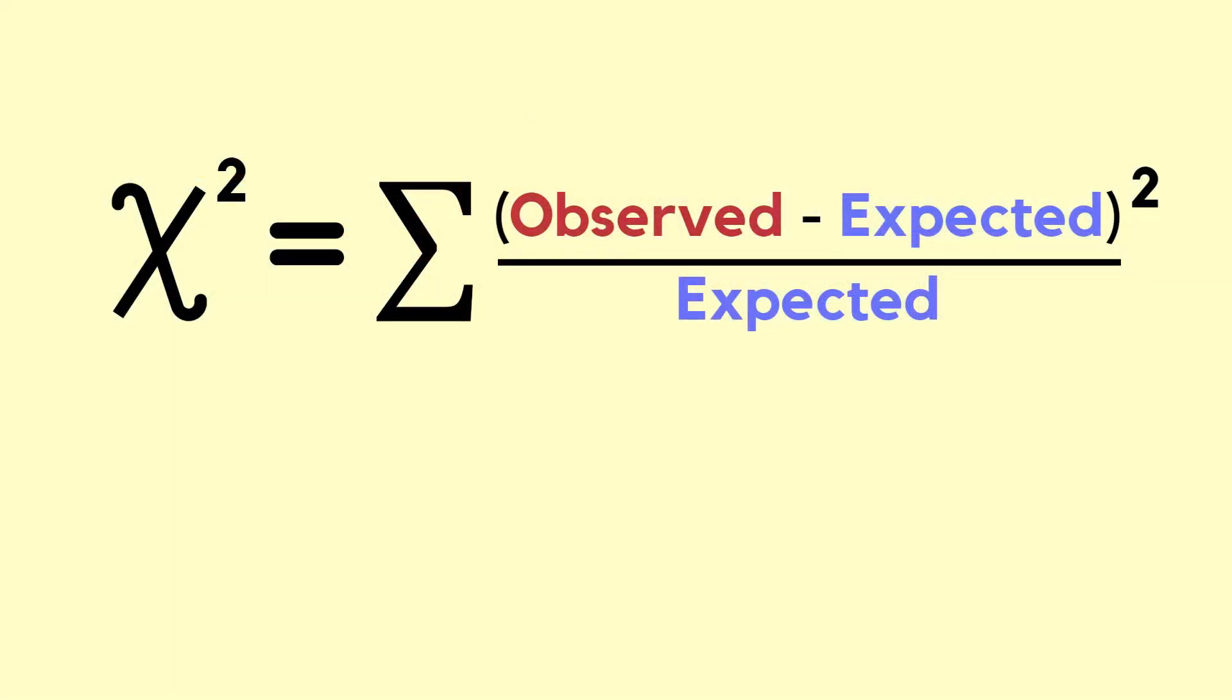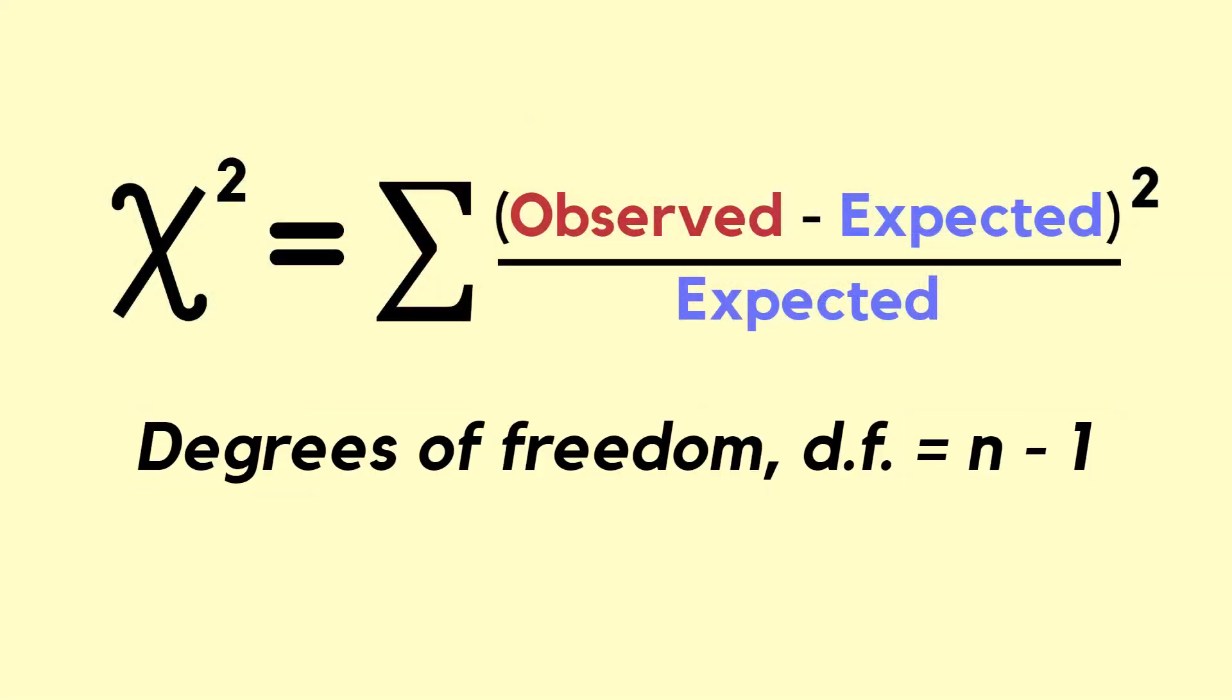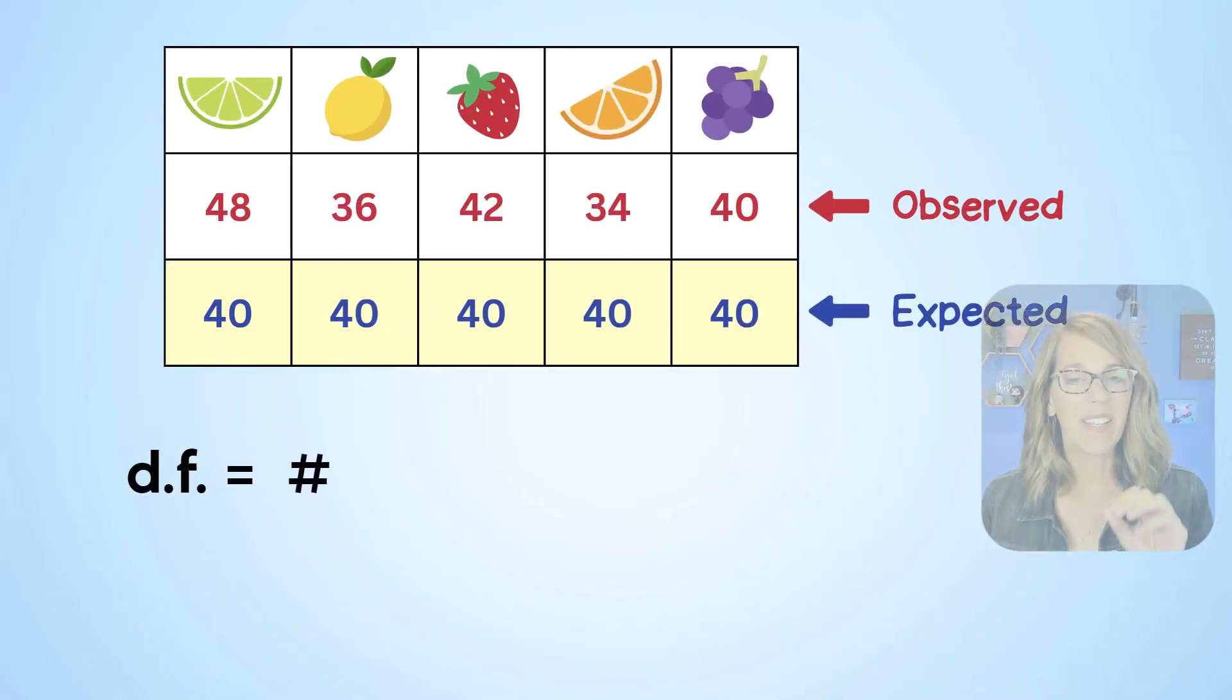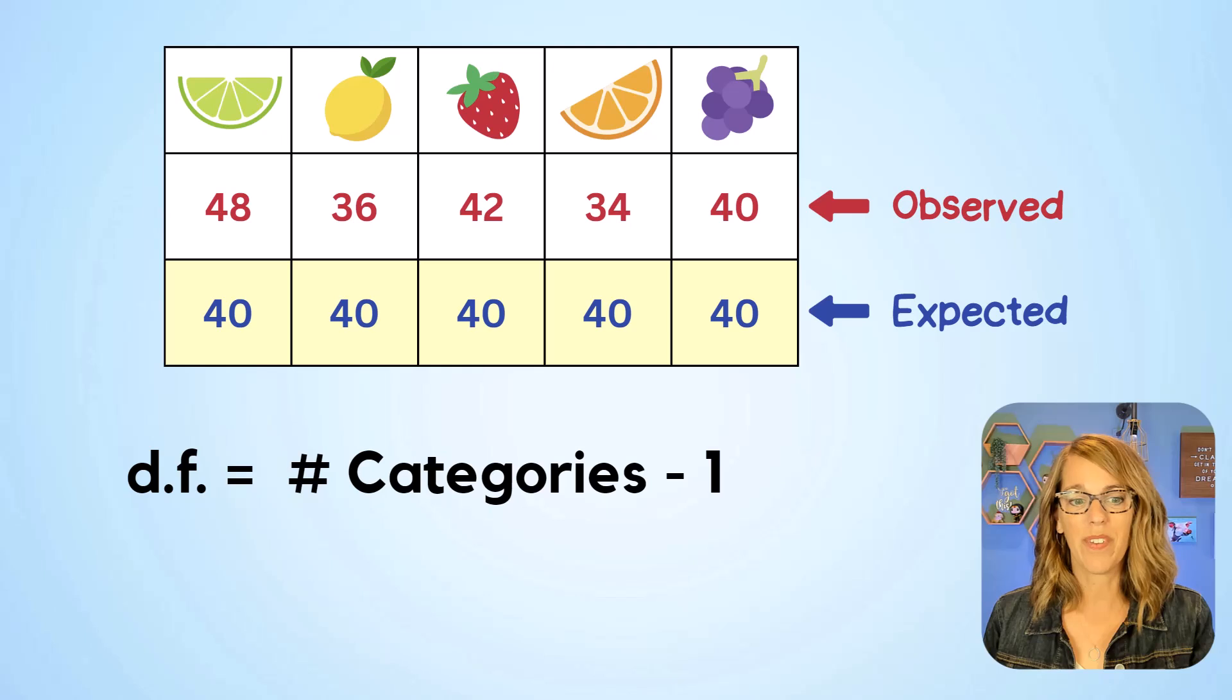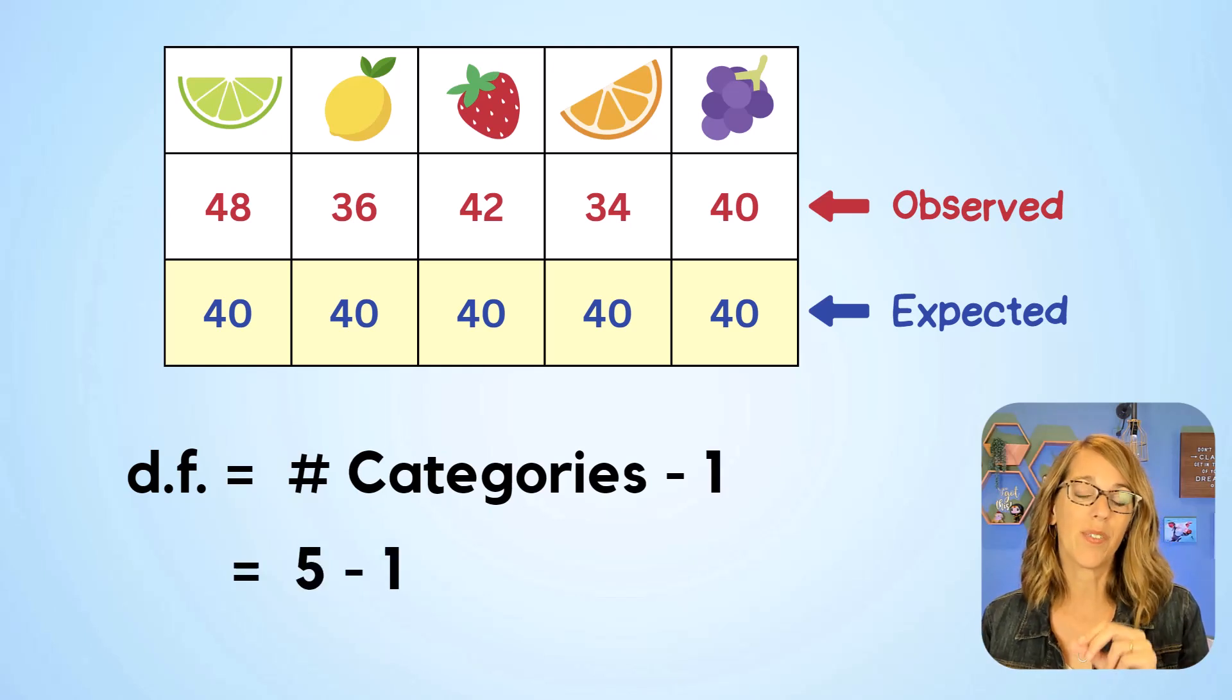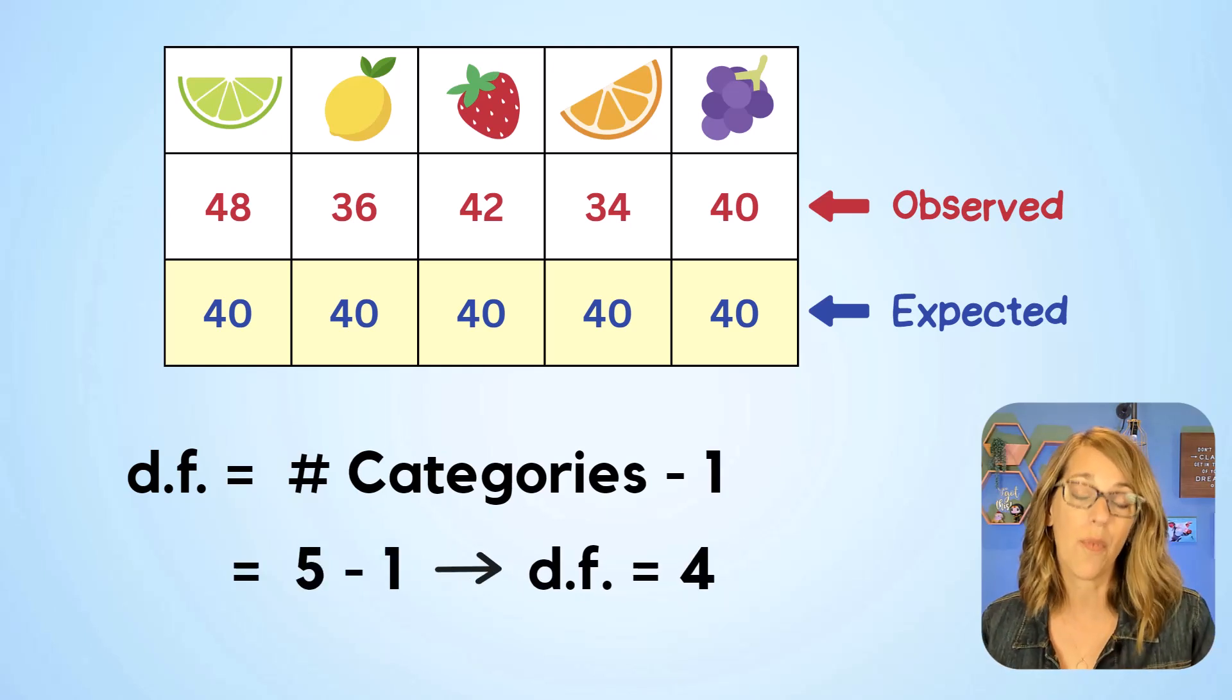So the test is going to figure out the chi-square value for us, but we need to figure out degrees of freedom, which is n minus one. Now degrees of freedom is n, which is the number of categories minus one. It's going to be our flavors, we've got five of those minus one, so our degrees of freedom is equal to four.